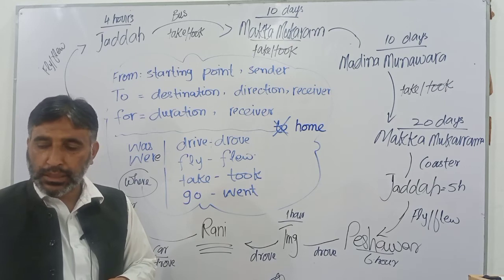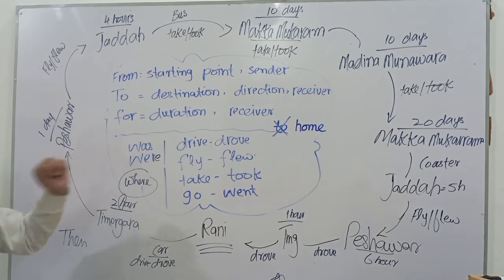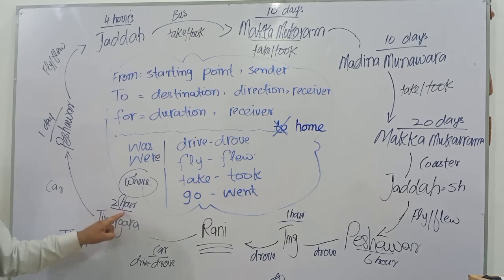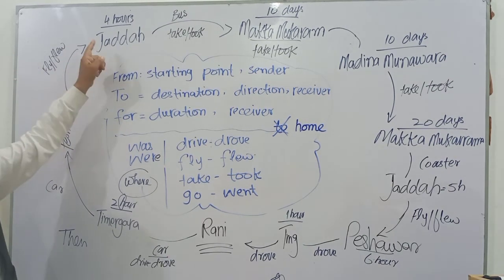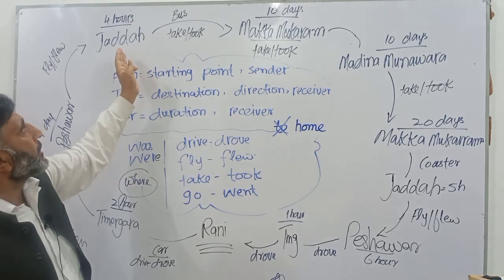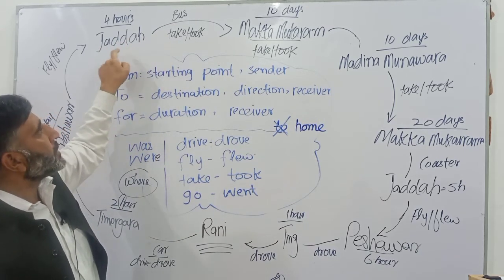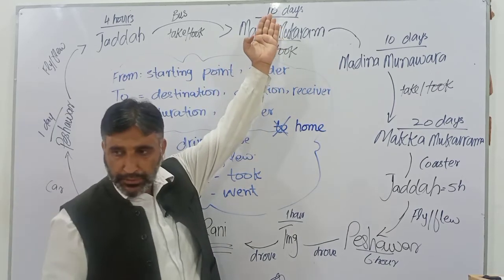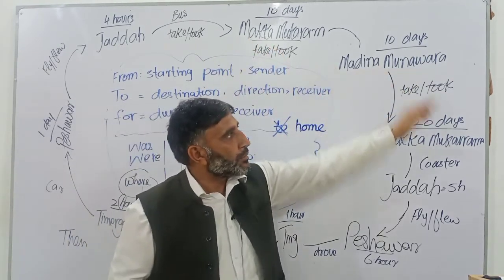Now for a single person — Bilal: Bilal drove from Rani to Temargara. He was in Temargara for two hours. Then he drove from Temargara to Peshawar. He was in Peshawar for one day. Then he flew from Peshawar to Jeddah. He was in Jeddah for four hours. Then he took a bus from Jeddah to Makkah Mukarram, and he was in Makkah for ten days.